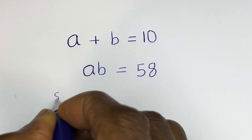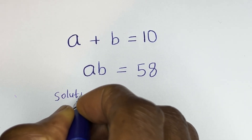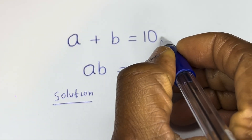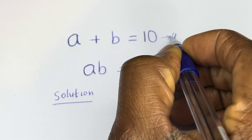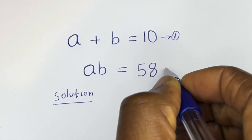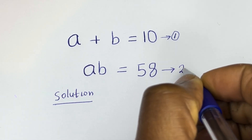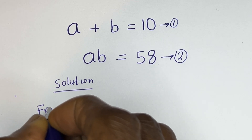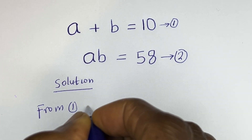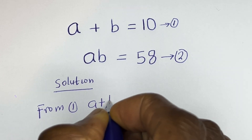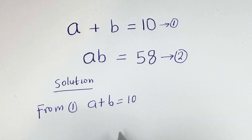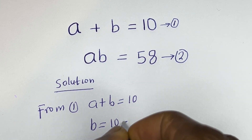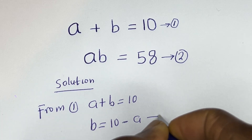Solution. We have a plus b is equal to 10 — let's call this equation 1. And a times b is equal to 58 — let's call this equation 2. From equation 1, let's make b the subject of the formula: b is equal to 10 minus a. Let's call this equation 3.